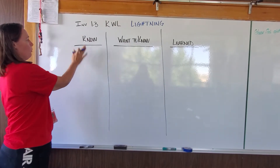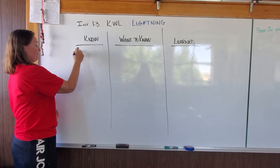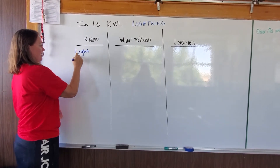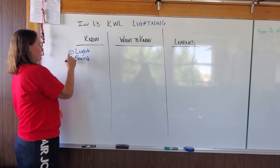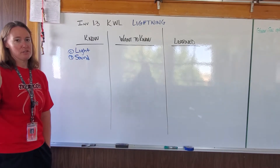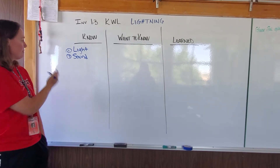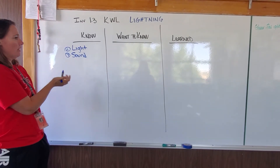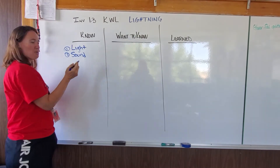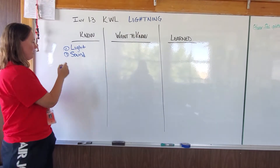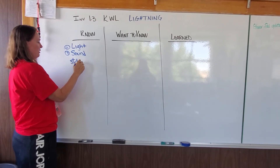So first, what do you know about lightning? Well, I know that lightning — there's light, and there's sound. This happens first, and this happens second, and that probably has to do with the speed of sound versus the speed of light. But we don't need to get into that today. I feel like lightning happens because of some kind of static electricity and clouds.